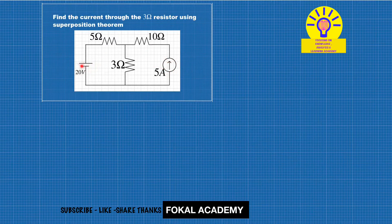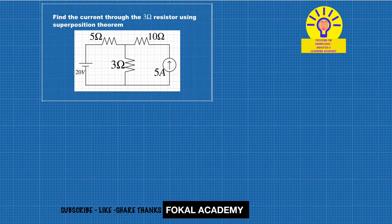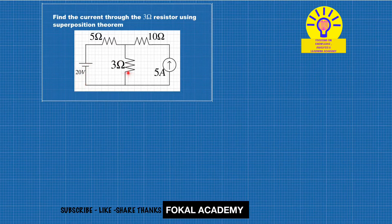Due to the 20-volt source, some current flows through the 3-ohm resistor, and due to the current source, some current enters the 3-ohm resistor. We find the individual currents due to each individual source. First, find how much current flows through the 3-ohm resistor due to the 5-ampere current source alone, so we short-circuit the 20-volt source.